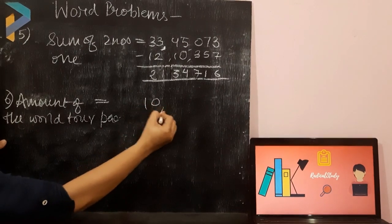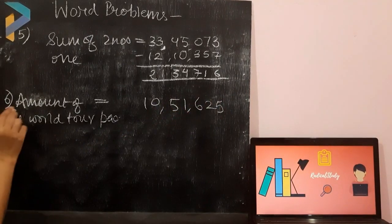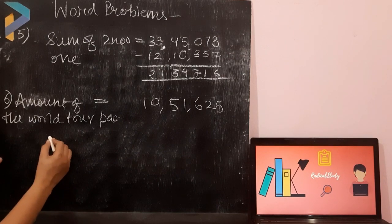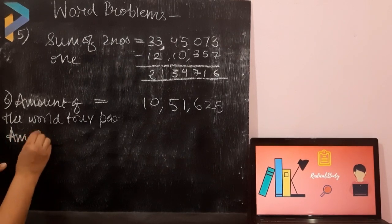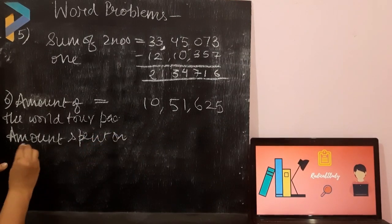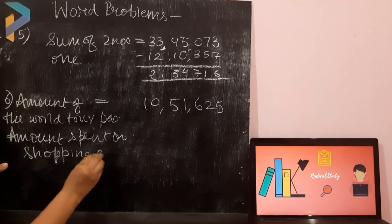Now, Rohit has spent 1,25,000 on his shopping expenses. What is the total amount of the world tour? How much he has spent for the shopping expenses? The statement will be amount spent on shopping expenses. How much amount was spent, students?